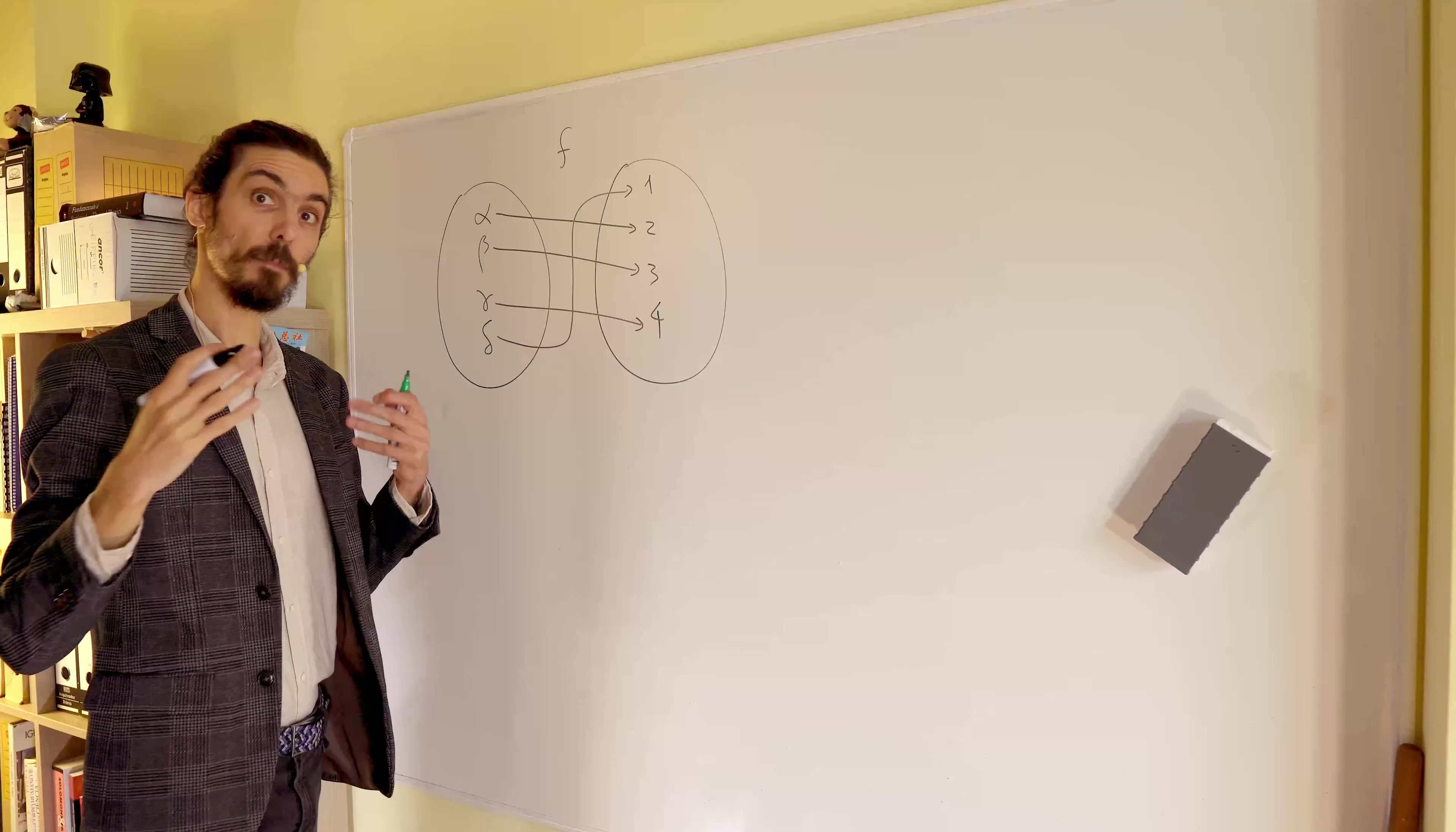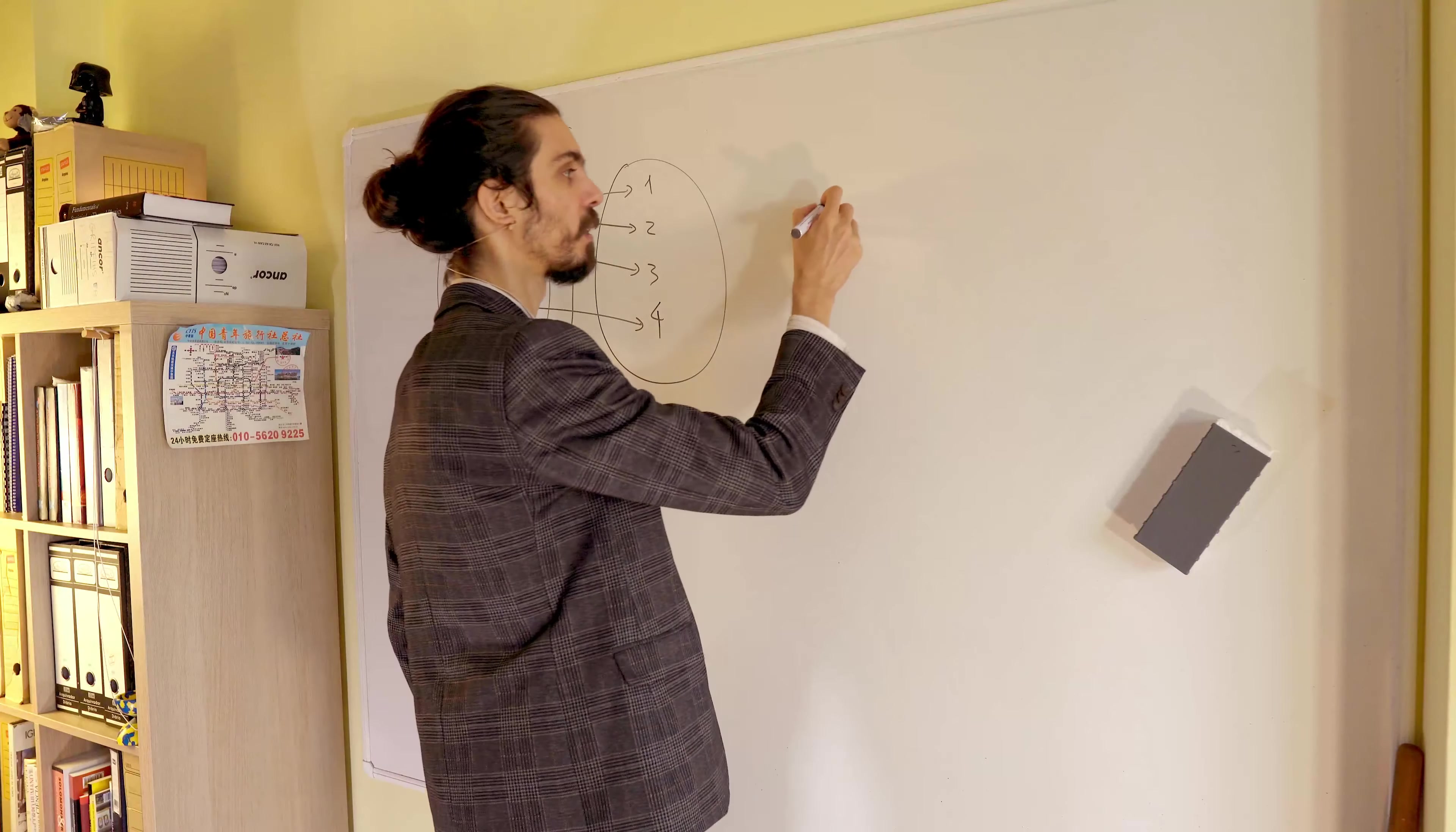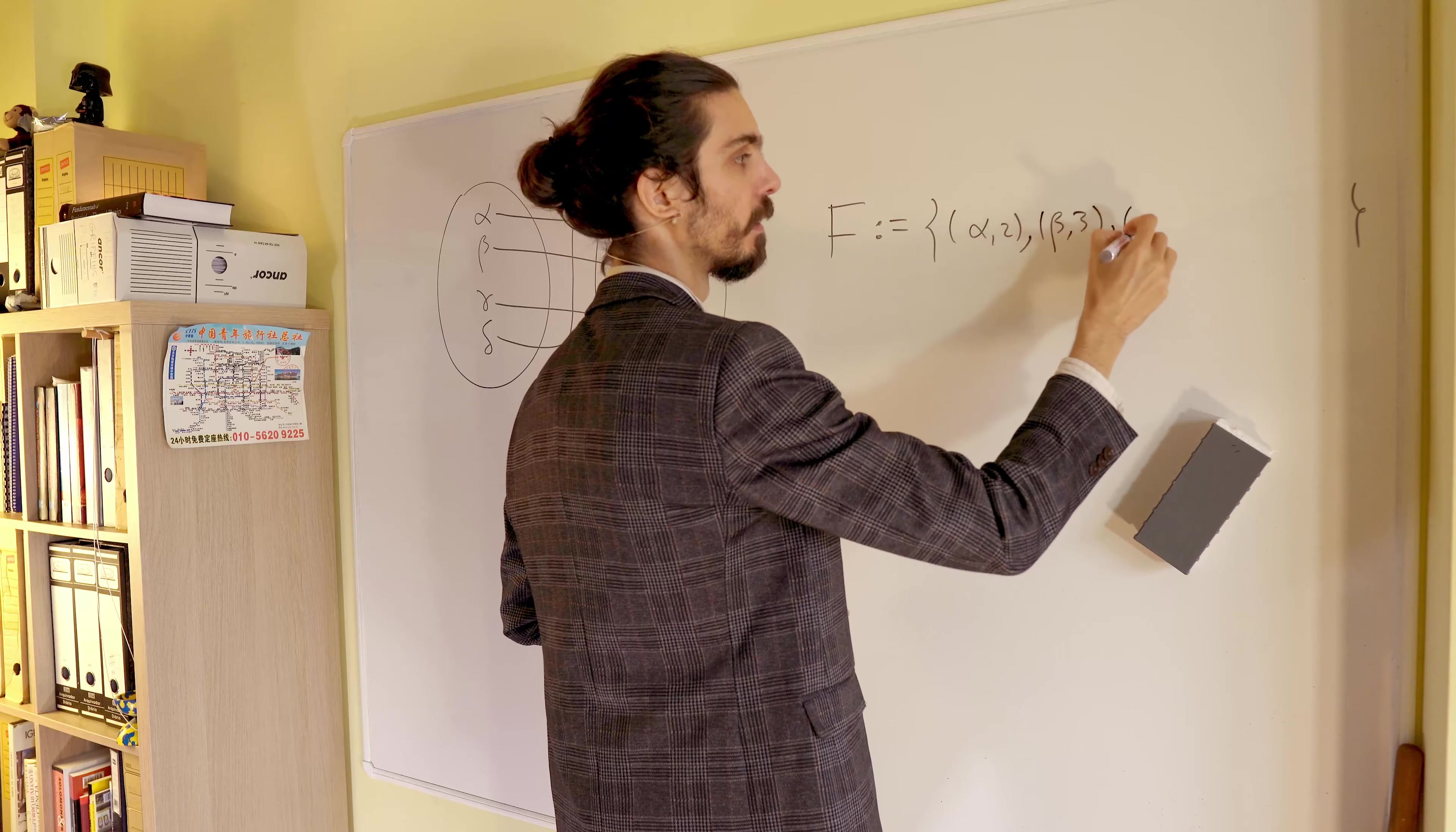So this is the diagrammatic point of view on a function. From the relation point of view, let us define big F to be the following set of ordered pairs. So the first one is alpha 2, and then beta 3, and so on. Beta 3, gamma 4, and delta 1.